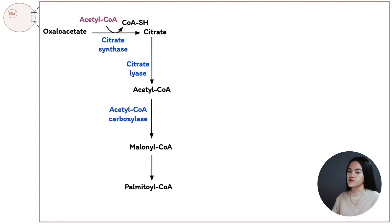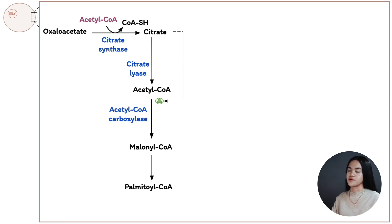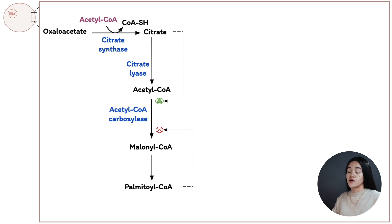When we have excess energy it's converted to fatty acids and stored as lipids. Citrate plays a role in the regulation of fatty acid synthesis — when the cell is producing a lot of citrate and transporting acetyl-CoA out of the mitochondria, it allosterically activates acetyl-CoA carboxylase, the rate-limiting step in fatty acid synthesis. The inhibitor of this enzyme is palmitoyl-CoA, which acts as a feedback inhibitor of acetyl-CoA carboxylase.